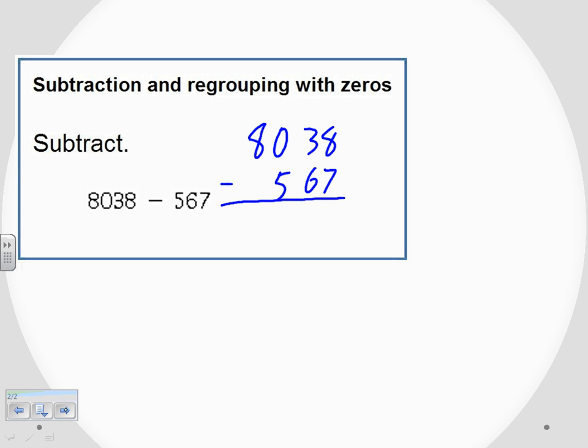I was being very careful to make sure that I lined up the right-hand side of both of these numbers because that's going to be my starting point right here - this furthest to the right column. Eight minus seven, that's something that we can do. Eight minus seven is one, so I'm going to put that one right below the eight and seven.